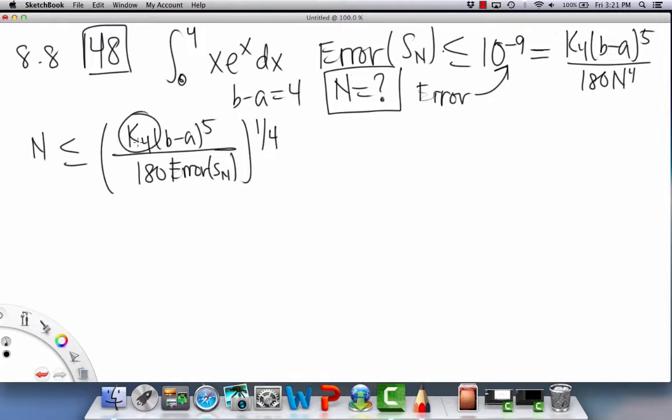Okay, so we're trying to find this K4, so that means we're going to have to do the derivatives. So f(x) equals x*e^x, f'(x), and now we're going to employ the product rule. So derivative of the second, so keep the first the same, derivative of the second is e^x, and then derivative of the first is 1 times keep the second the same, so we're just going to get x*e^x times e^x plus e^x. Let's try the second one.